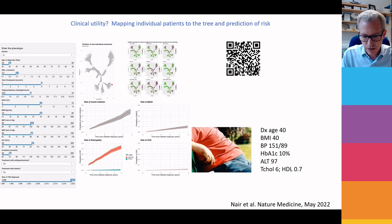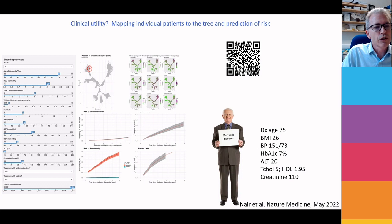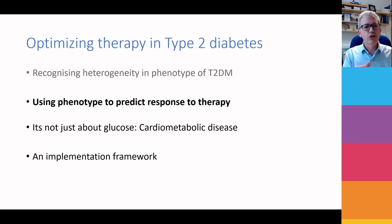Whereas this other person is slimmer and obviously older, but his lipid profile, HbA1c, and ALT put him up here in the tree — a much better place to be. He's got much lower rates of progression to insulin, but because of his age he's still at quite high risk of cardiovascular disease. So hopefully you can see how we need to recognize heterogeneity in the phenotype of type 2 diabetes, and that really predicts outcome.